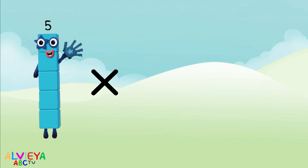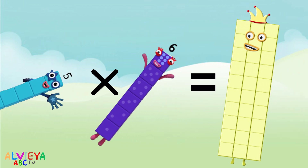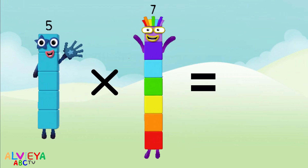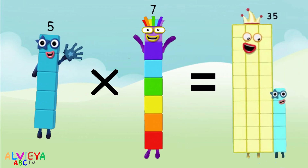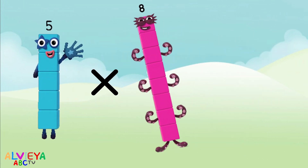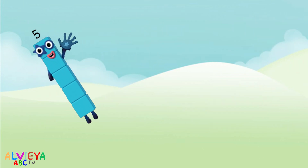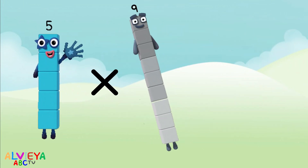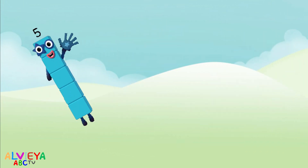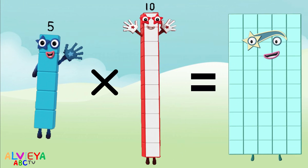Five times six equals thirty. Five times seven equals thirty-five. Five times eight equals forty. Five times nine equals forty-five. Five times ten equals fifty.